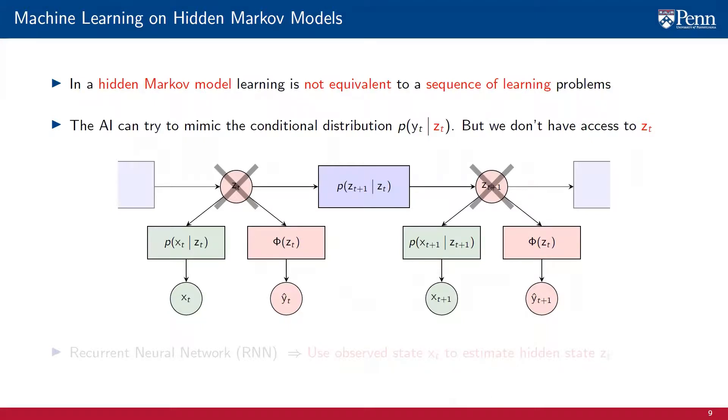This is the reason why the process is hidden Markov, not plain Markov. What we know is the observable state xt, but this is not sufficient for us to neglect the history of the process.